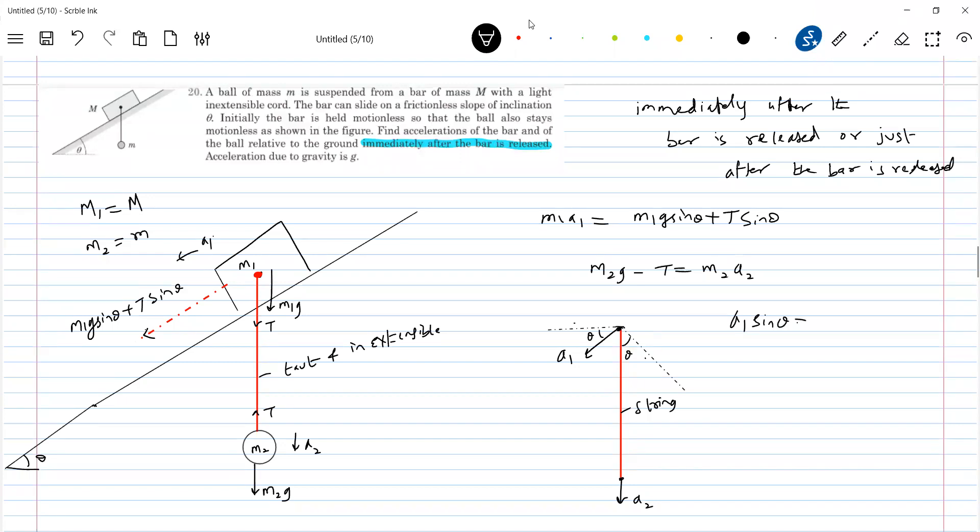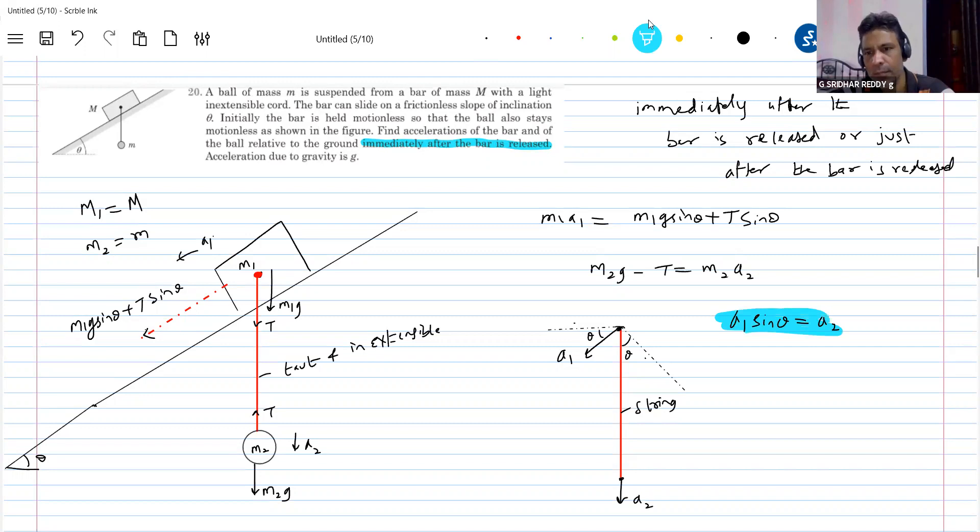A1 cos theta should be equal to A2. Finished. That's the constraint equation. Constraint equation due to string.